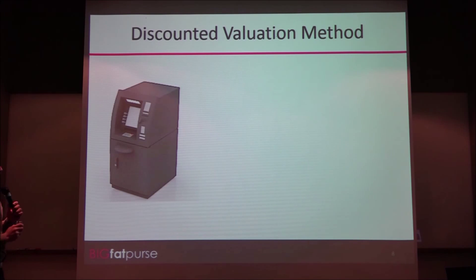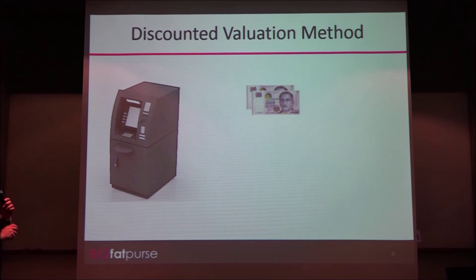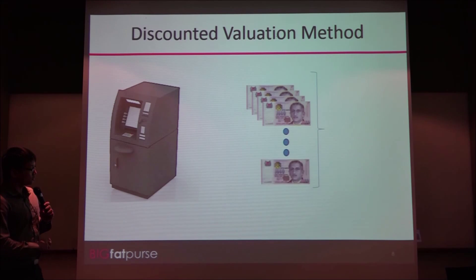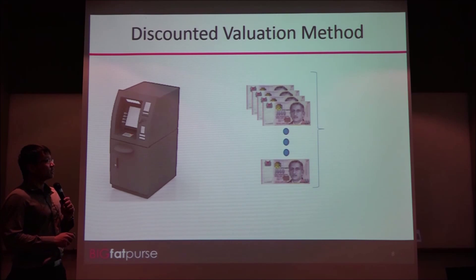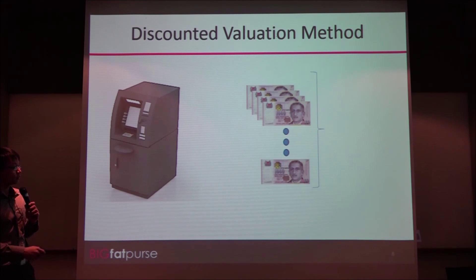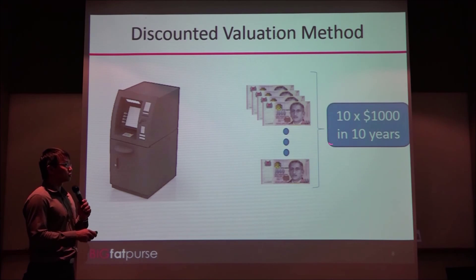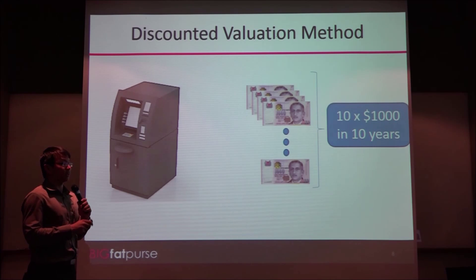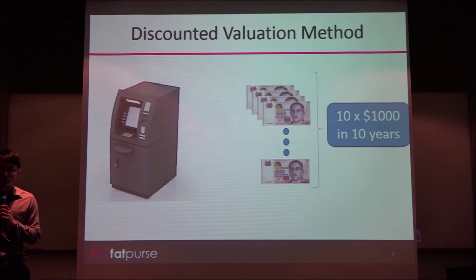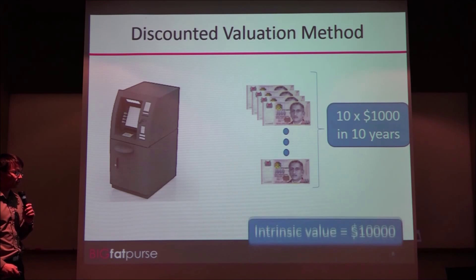But let's say another cash machine gives you cash every year — $1,000 per year. Assuming this cash machine can give you $1,000 per year for 10 years, that's 10 times $1,000 over 10 years. So what is the intrinsic value of this cash machine? Is it $10,000? Less than $10,000, right?